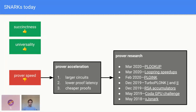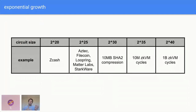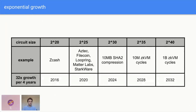One prediction we can make is that we're going to see exponential growth in the circuits being tackled. We started with Zcash, which is kind of a baby circuit, and gradually we're building up the size. We're currently on the order of 2^25 gates, but in the grand scheme of things we're still tiny, and there's lots of room to grow. A tentative roadmap is to grow circuit size by 32x every four years — a bit more aggressive than Moore's law.